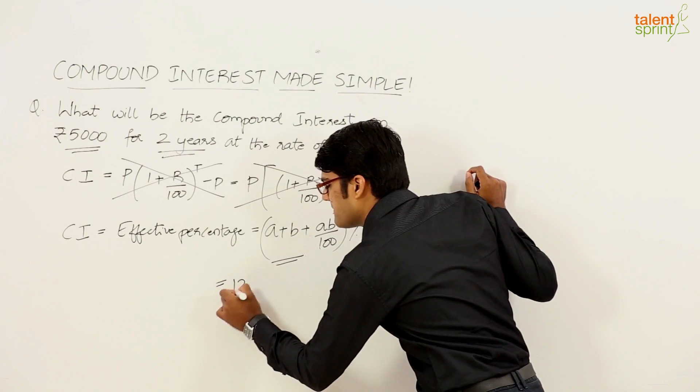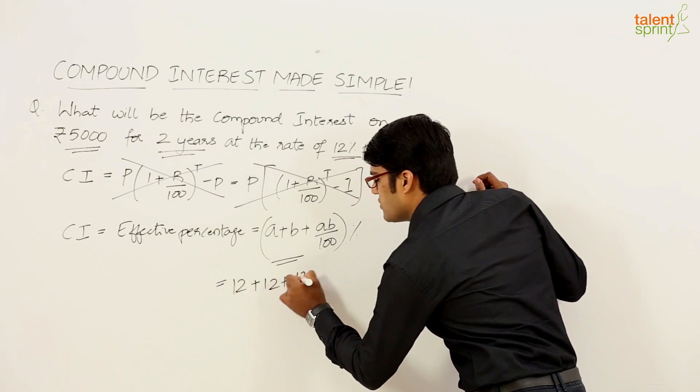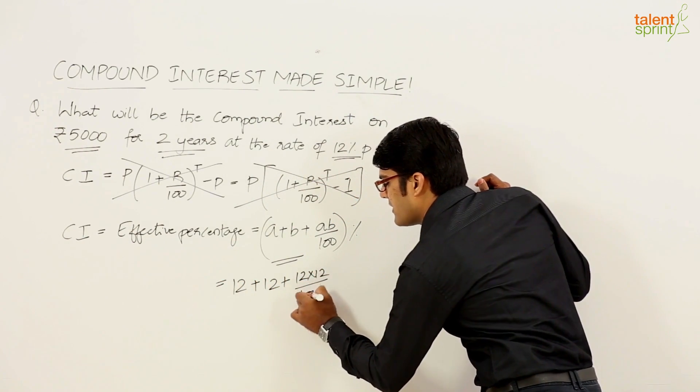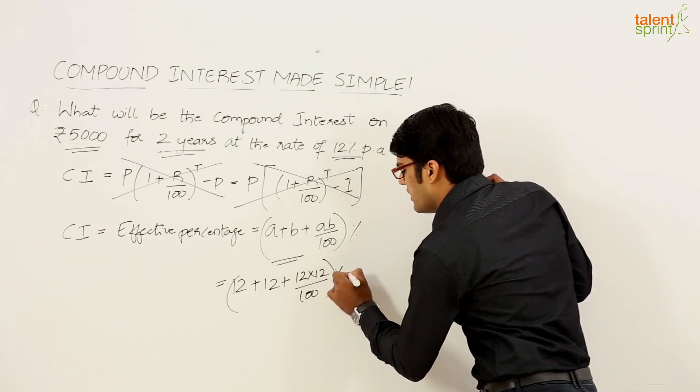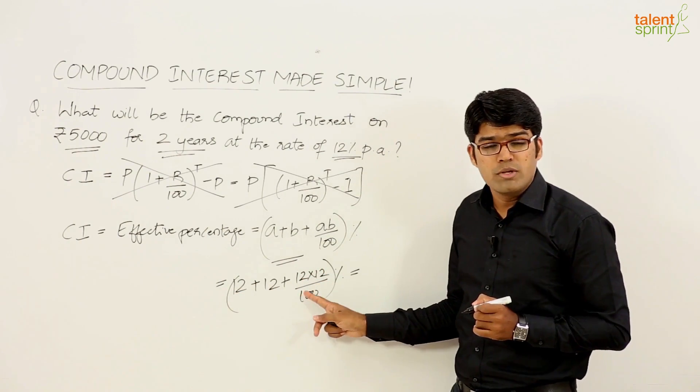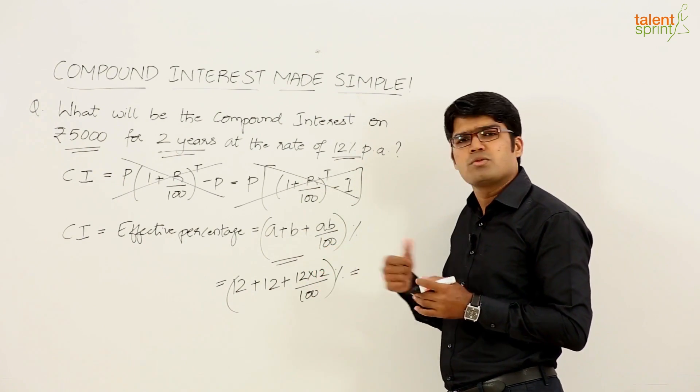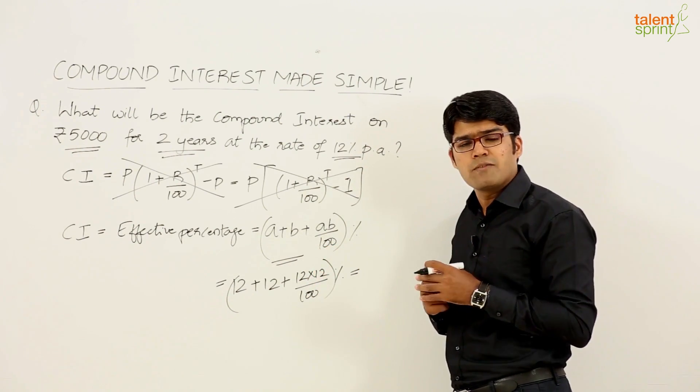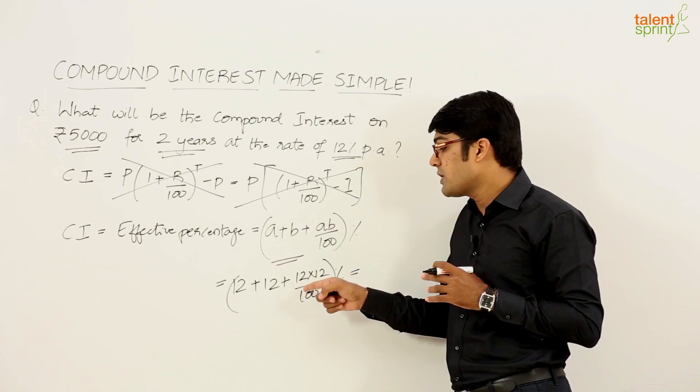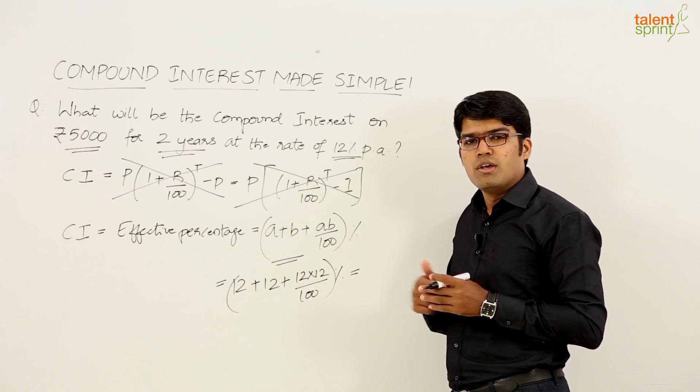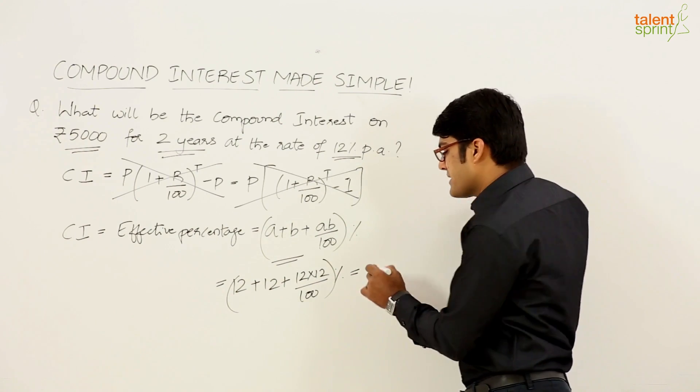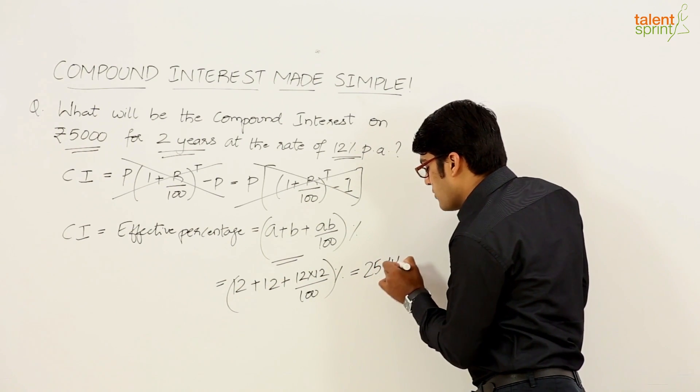What do we get here? 12 plus 12 plus 12 into 12 upon 100 percent. I am sure you need not put on paper for doing this calculation. Very simple: 12 plus 12 is 24, 12 into 12 is 12 square which is 144 upon 100. Now 144 upon 100 is 1.44, so 24 plus 1.44 is 25.44 percent.